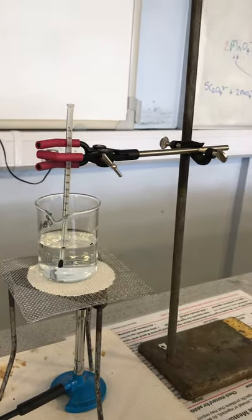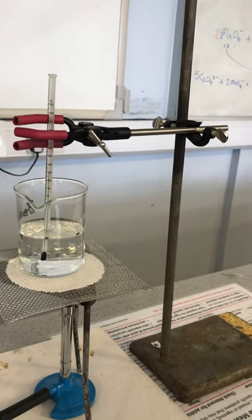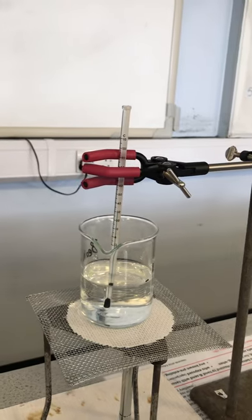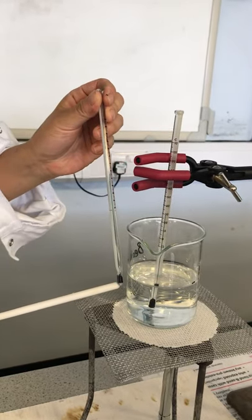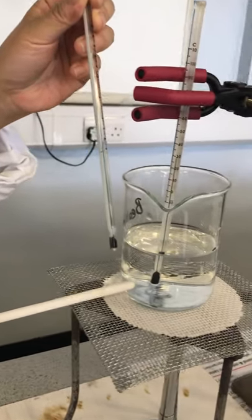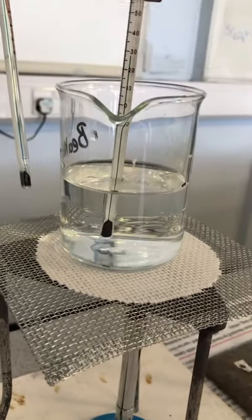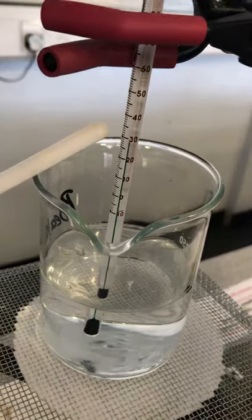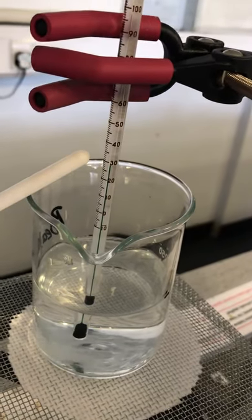If you want, you can use a clamp stand to hold the thermometer in one place and make sure the bulb of the thermometer is fully submerged inside the water. Now we take the start reading of the thermometer before heating the water.